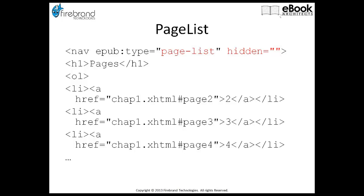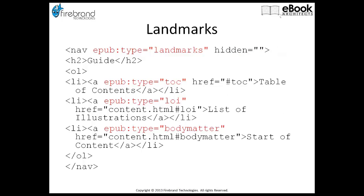The landmarks epub:type navigation is the replacement for the guide — if you're not familiar, the guide is a section in EPUB 2's OPF file that points to the table of contents, the first reading location, a list of illustrations, and other special locations within the document. This is what Amazon uses for its "go to table of contents" or "go to beginning" links. In EPUB 3 it's done this way with epub:type="landmarks", using epub:type attributes on each anchor to point out whether it's the table of contents, list of illustrations, or body matter.